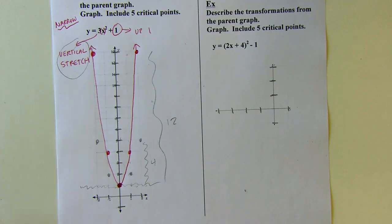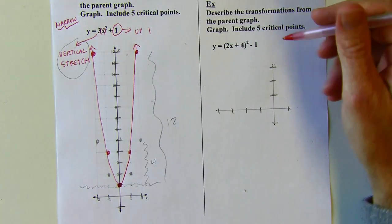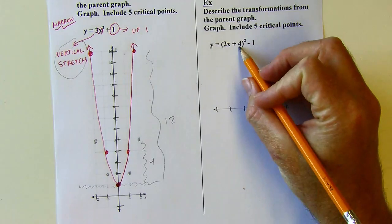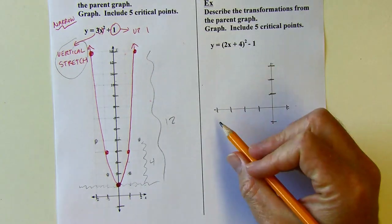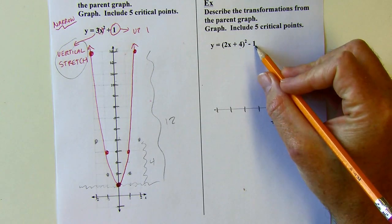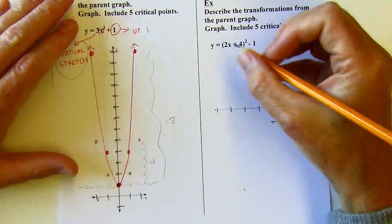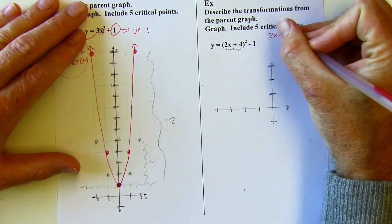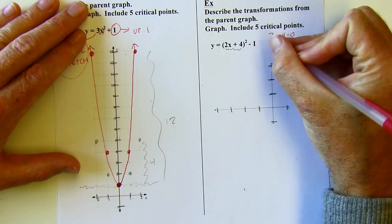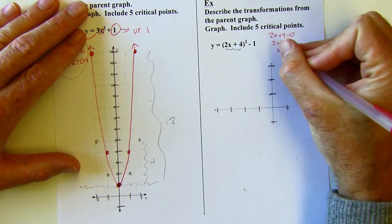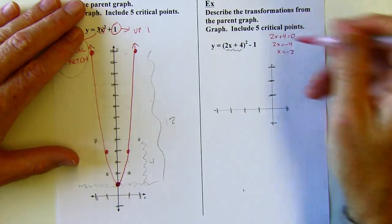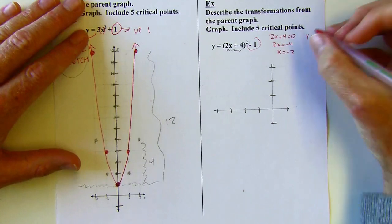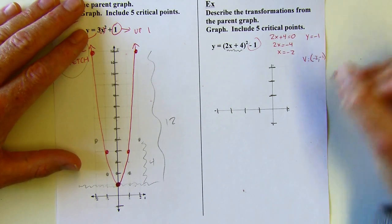Let's look at the next one. I like to find the vertex first. This one already has parentheses in. Some people say the vertex is (negative 4, negative 1), but that's incorrect — they're just changing the sign and taking that value, which works only if the 2 wasn't there. You want to take the whole contents of the parentheses and set it equal to zero to find your x value.